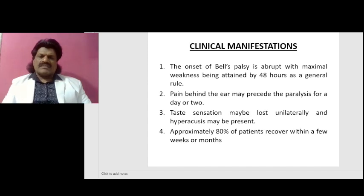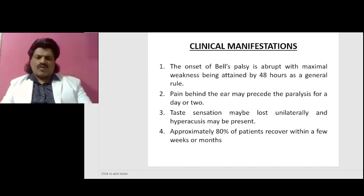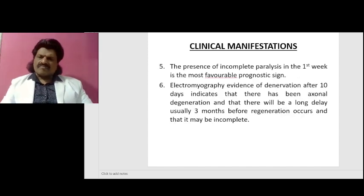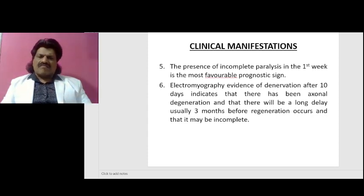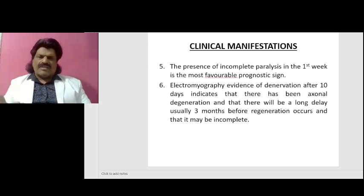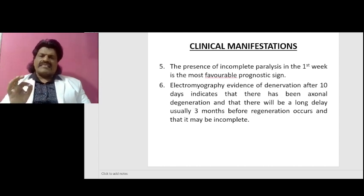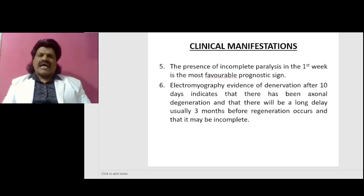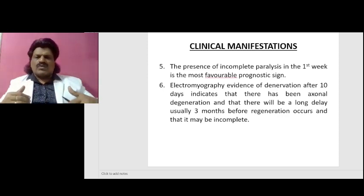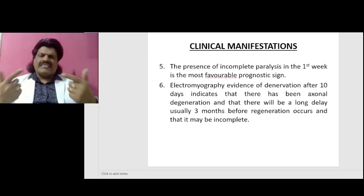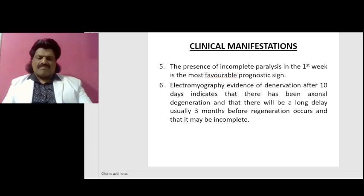Approximately 80 percent of patients recover within a few weeks or months. The presence of incomplete paralysis in the first week is the most favorable prognostic sign. Electromyography evidence of denervation after 10 days indicates axonal degeneration, and there may be a long delay — usually three months — before regeneration occurs, and it may be incomplete.